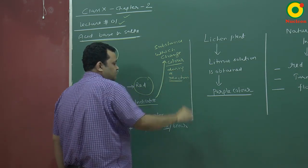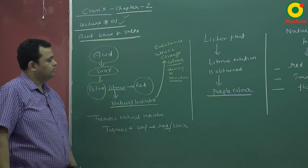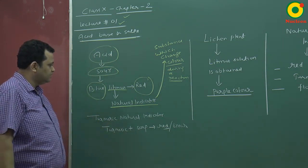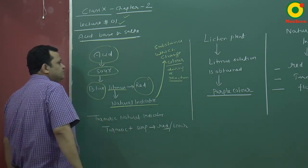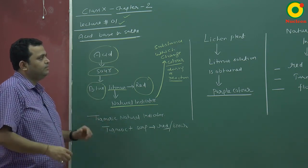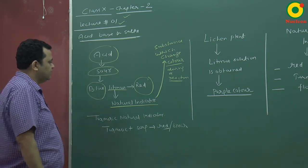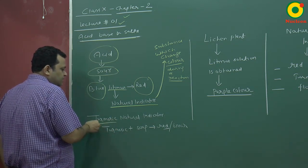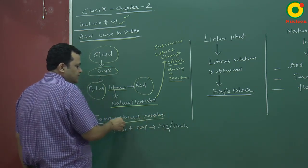If a substance can change color during a reaction, we call it an indicator. Litmus is a natural indicator because it is a natural compound. There is another indicator which is turmeric, which is also a natural indicator.